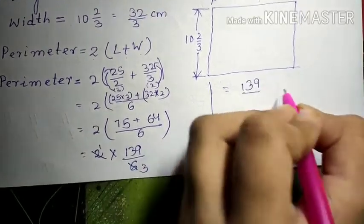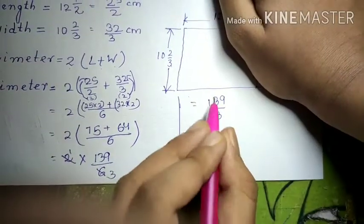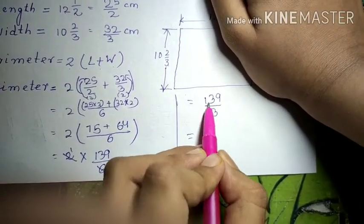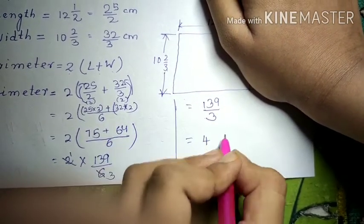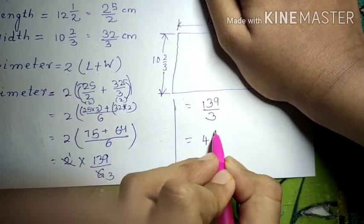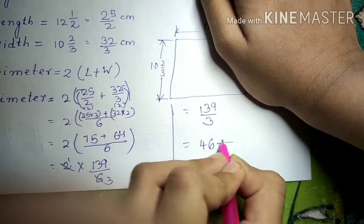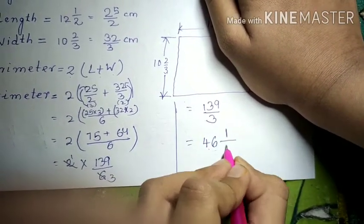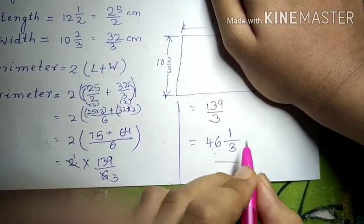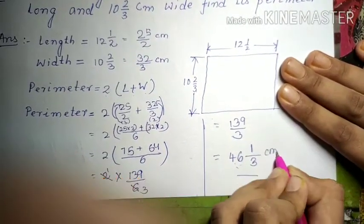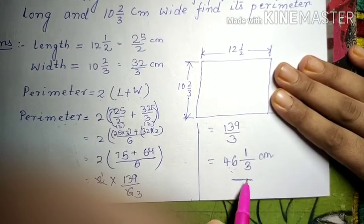Now the answer we got is 139/3. So here this is an improper fraction so we will convert. In 3's table 13 doesn't come, so 3 fours are 12, 13 minus 12 is 1, 9 comes down making 19. So in 3's table, 3 sixes are 18, 19 minus 18 is 1. So our quotient is 46, our remainder is 1 and the denominator place will be 3. So our answer came in mixed fraction 46 1/3 which is in centimeter. So the perimeter of the rectangular sheet is 46 1/3 cm. Thank you.